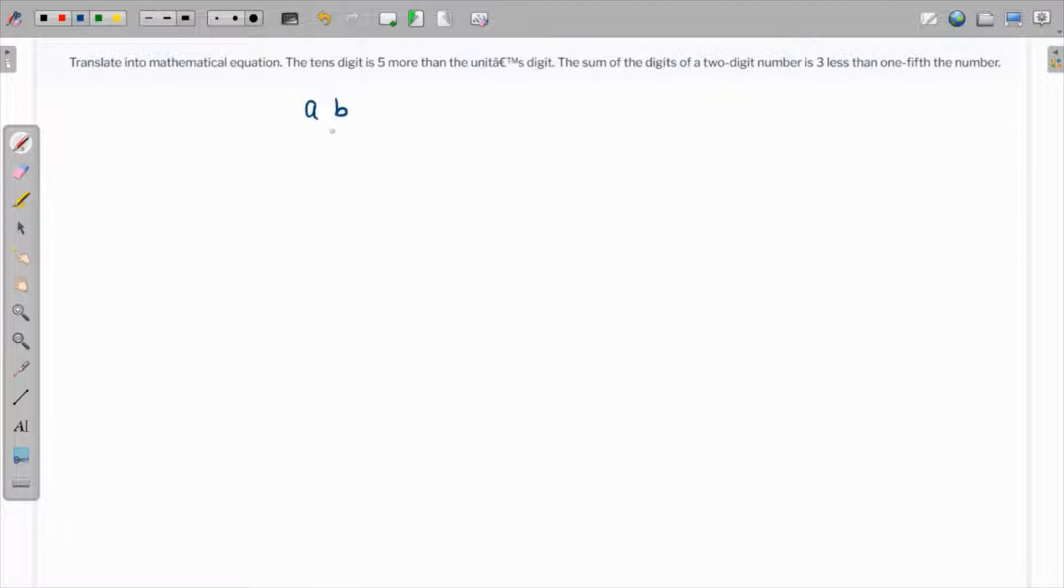say the number is a b. So if the number is a b, then we are given that the tens digit—so this is the ones place and this is the tens place—